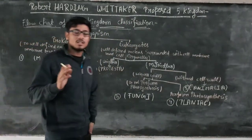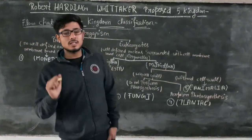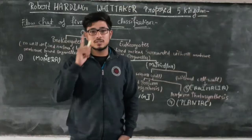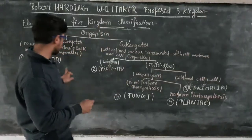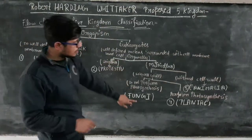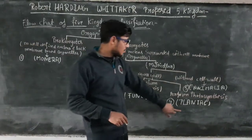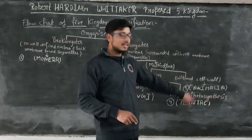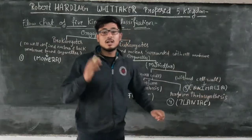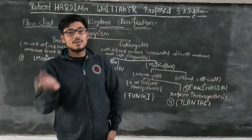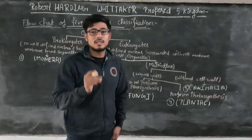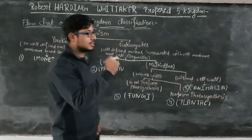As you can see, the first one is Monera, the second one is Protista, the third one is Fungi, the fourth one is Plantae, and the fifth one is Animalia. This is shown in a little bit further detail in the flow chart.